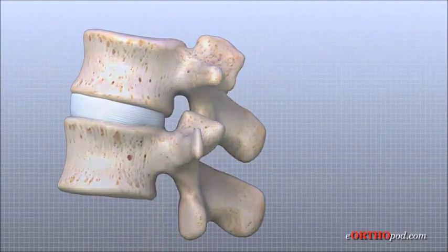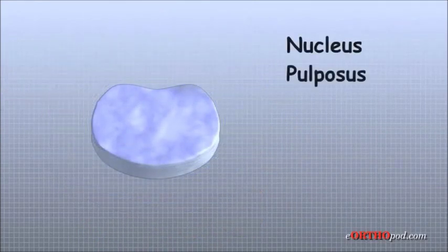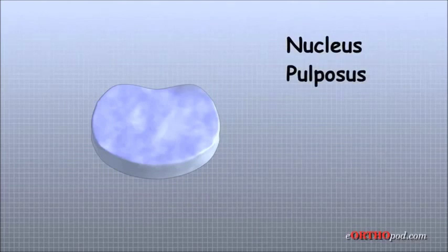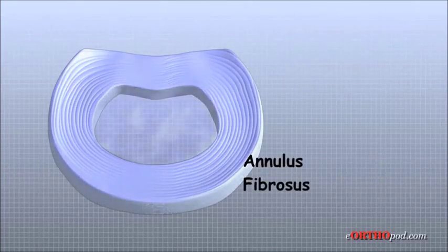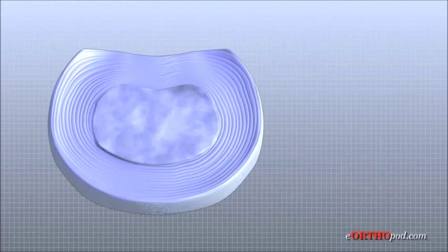An intervertebral disc is made up of two parts. The center, called the nucleus pulposus, is spongy and acts like a shock absorber to cushion the force between each vertebra. The nucleus is surrounded by a series of strong ligamentous rings called the annulus fibrosus. Ligaments are made of strong connective tissue and connect one bone to another. The annulus fibrosus is a special ligament that connects two vertebrae together.